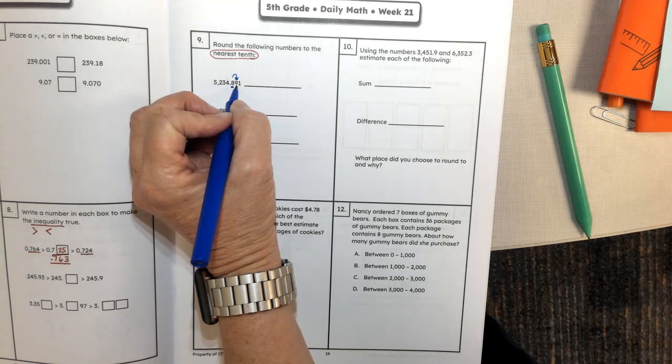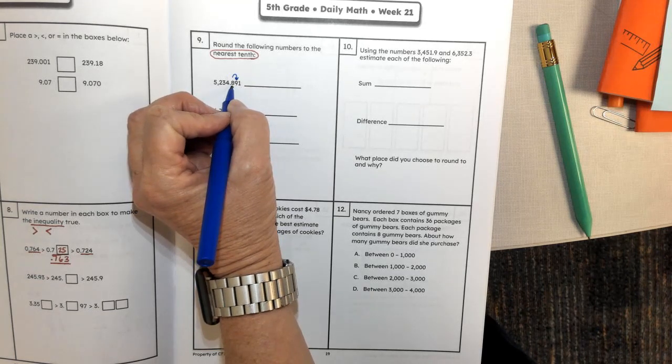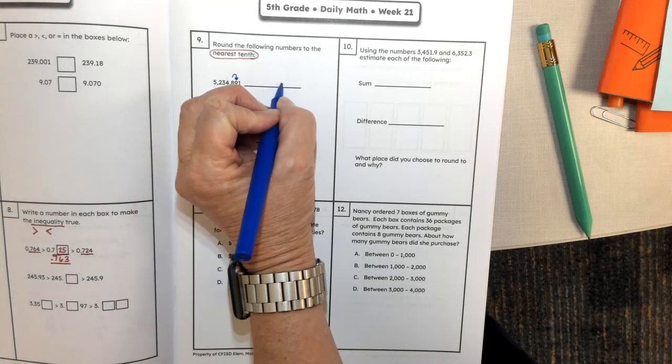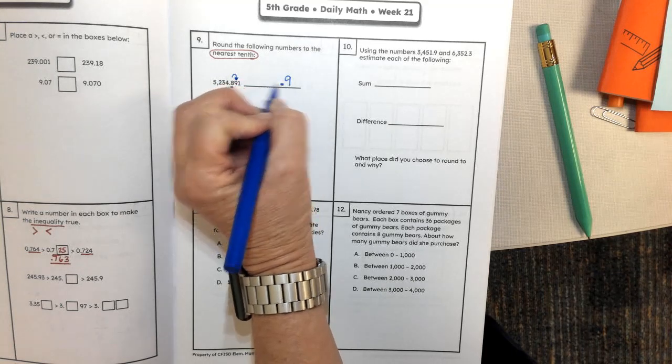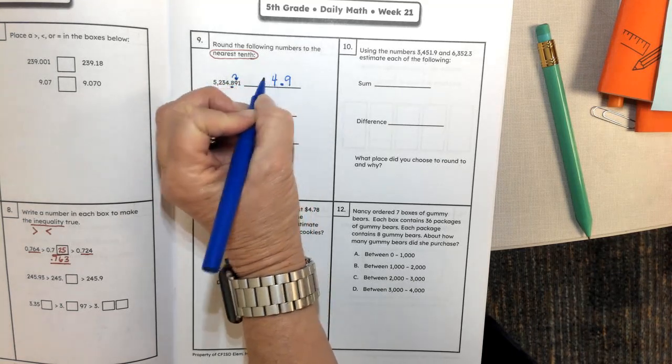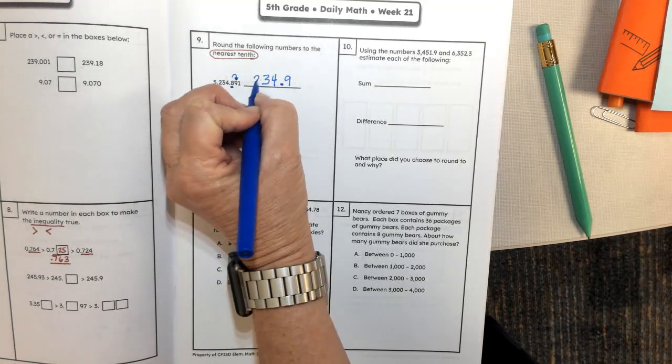If it's five or higher we're going to make this number grow up. So we're going to start with our decimal point and this number is going to grow up to the number nine, and then I keep all the digits in front of that decimal point the same.